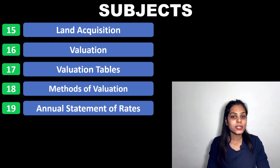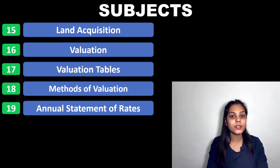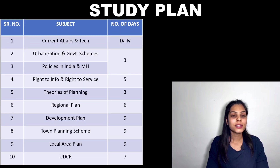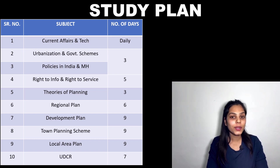Without a study plan, you might just keep reading one subject for 15 or 20 days and then realize you don't have time for the others. So first we will talk about the study plan. This is the study plan we have made. If you think some iterations or adjustments should be made, you can do so according to yourself.